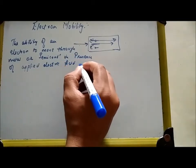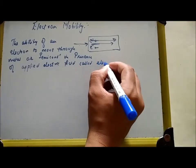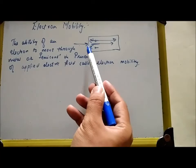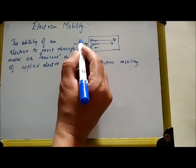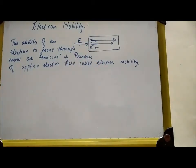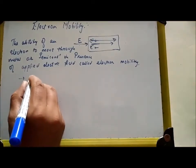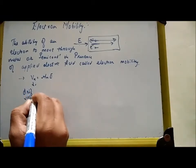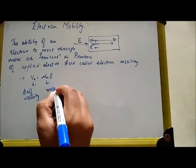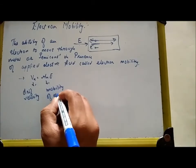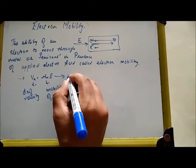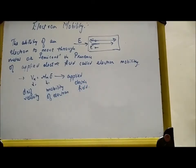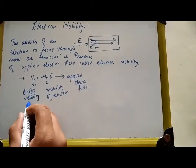is called electron mobility. So electron mobility is the ability of the electron to move through the metal or semiconductor in the presence of an external field. Mathematically, it is expressed as vn = μn × E, where vn is the drift velocity, μn is the mobility of the electron, and E is the applied electric field.